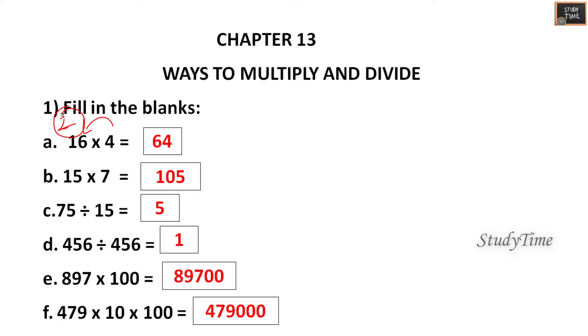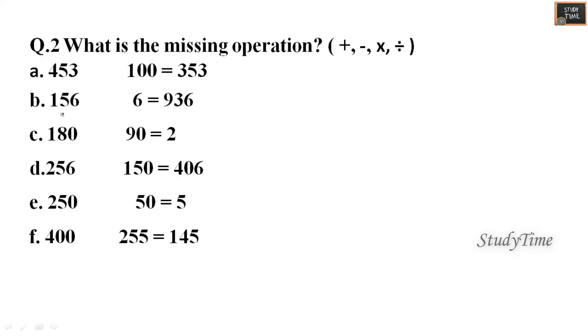What is the missing operation here? Few questions are given, you have to write the correct missing operation. 453 minus 100 is 353, 156 into 6 is 936, 180 divided by 90 is 2, 256 plus 150 is 406. Next 250 divided by 50 is 5, 400 minus 255 is 145.